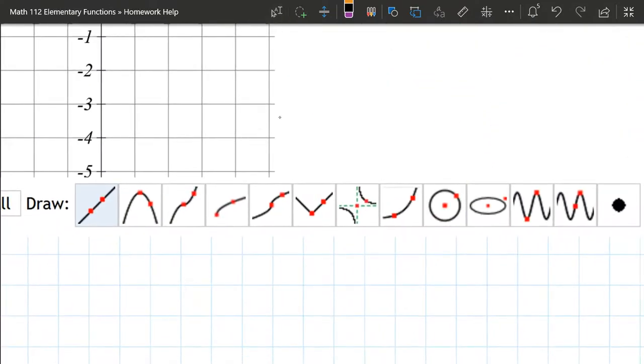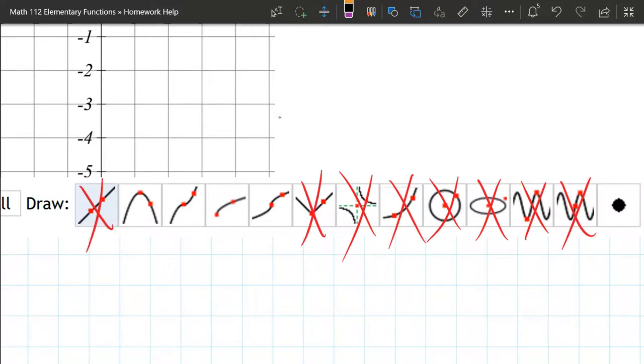Alright, some obvious ones that aren't it. It's neither of these sine cosine functions. It's not any of these circle or ellipse. This is an exponential, not that. Does not have any vertical asymptote. Does not look like absolute value. It's not a line. Alright, so now we're starting to narrow down here.